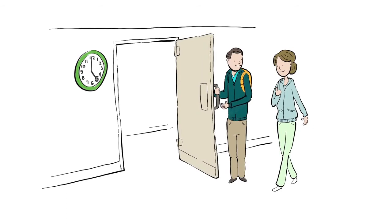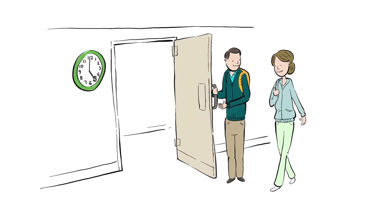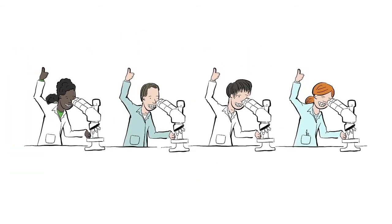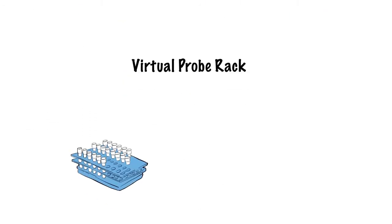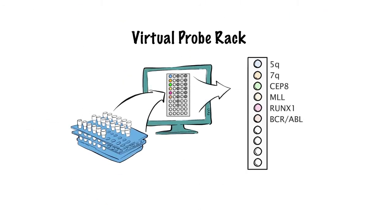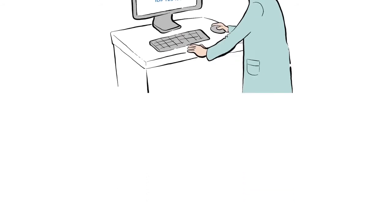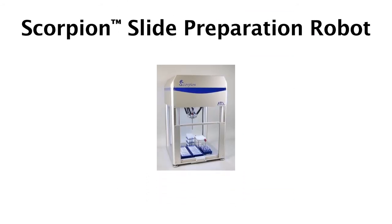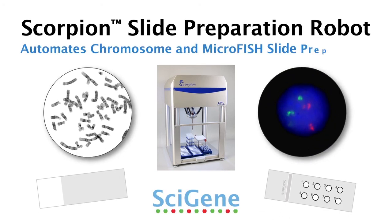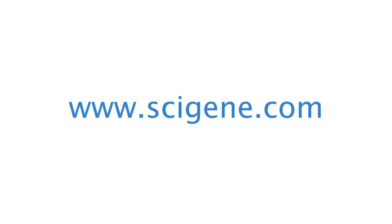The Scorpion Robot eliminates hours preparing slides, reduces variability in metaphase spreads, eliminates FISH probe mixups, and generates comprehensive patient reports. The Scorpion Slide Preparation Robot transforms the operation of cytogenetics labs by automating chromosome and microFISH slide preparation. Contact SciGene to learn more.